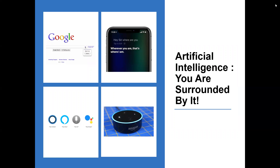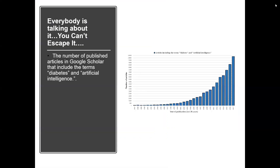We are surrounded by artificial intelligence at this point of time. Google gives you all the information, Siri gives you all the information, Amazon gives you all the information. These are things we get every day — that is what artificial intelligence is. Everybody is talking about it and you can't escape it. From 1987 to 2017, the number of AI users has been increasing.